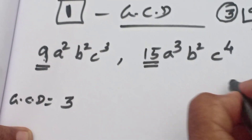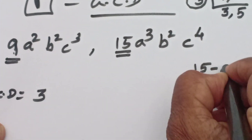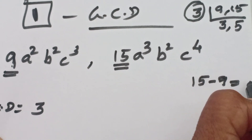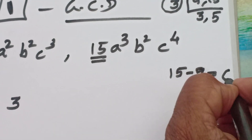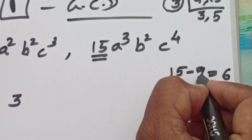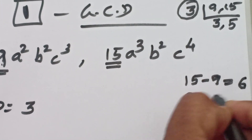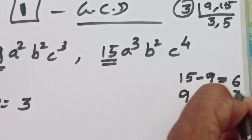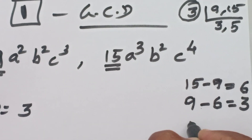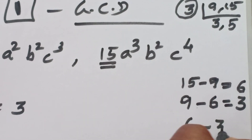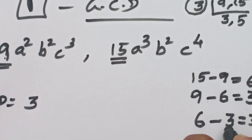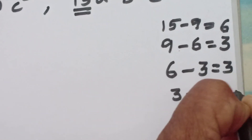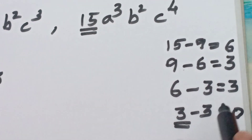While you are getting 0, that will be the answer. So 3 is the GCD of the numbers. While you get 0, that number is the GCD.